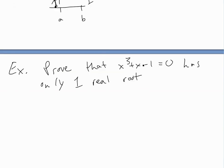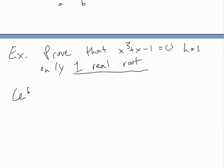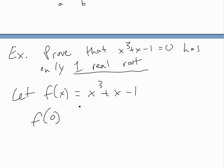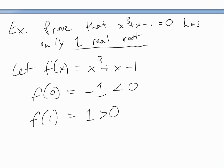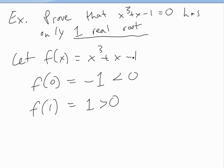Here's an example: let's say we want to prove that x cubed plus x minus one equals zero has only one real root. Let f of x equal x cubed plus x minus one. If we plug in f of zero, we get zero plus zero minus one, which is negative one — less than zero. And if we plug in f of one, we get one plus one minus one, which equals one — greater than zero. By the intermediate value theorem, since this is a continuous polynomial with no breaks, there is going to be a value equal to zero, so it has at least one root.